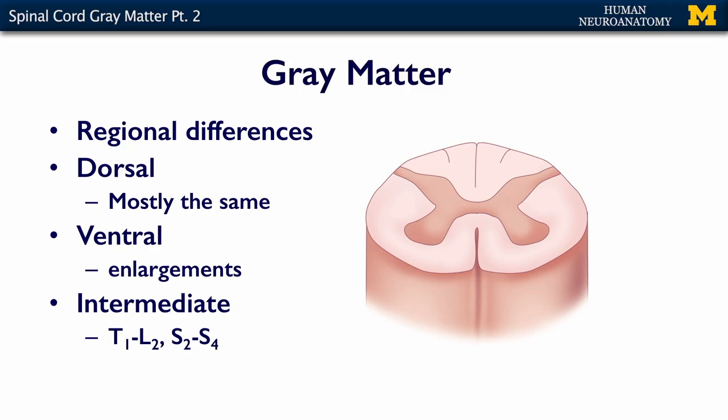Basically, the dorsal horn is pretty homogenous from top to bottom, while the ventral has more differences from top to bottom. In the next segment, we'll talk about the white matter.